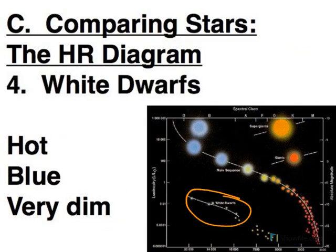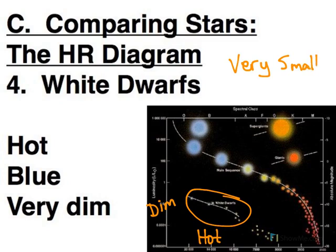Similarly with these stars down here, now we're looking at stars that are dim, but very hot. And so hot stars should be bright. The fact that they're dim, they must be very small. And so we call those dwarfs.